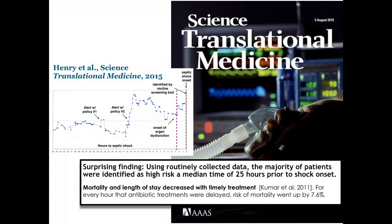What about AI-type technologies that sit in the background, constantly looking at measurements in real time and making assessments about every individual — because the computer can tirelessly reason through what's going on? In a cover article in Science Translational Medicine last year, we showed that using routinely collected data — and this is what I mean by precision healthcare — we don't have to wait until every person is sequenced. Using this data, we could identify patients with septic shock a median of 25 hours early. For context, there's data showing that every hour treatment is delayed, mortality increases by seven to eight percent.